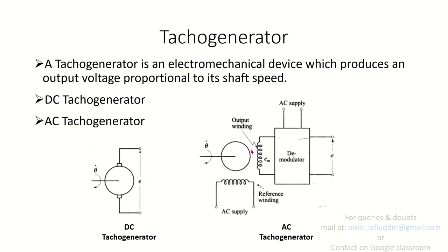The AC Tachogenerator operates on AC supply. As shown, there are two windings similar to a two-phase induction motor and they are placed in quadrature fashion — at an angle of 90 degrees. One is called the reference winding and the other is the output winding. In case of the reference winding, the AC supply is given, and the other input is the shaft speed to the rotor.